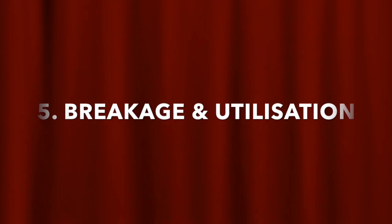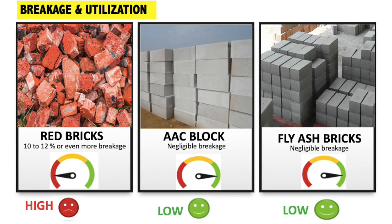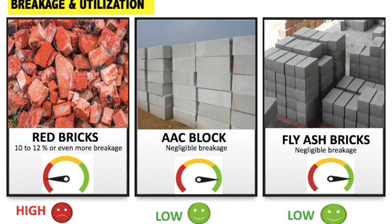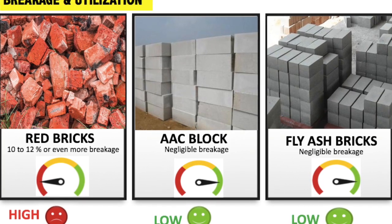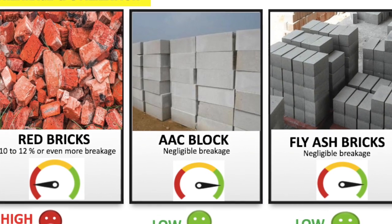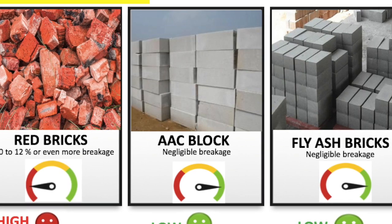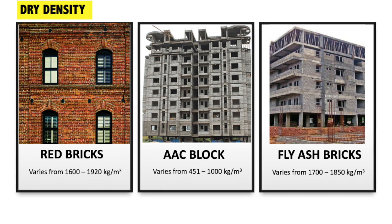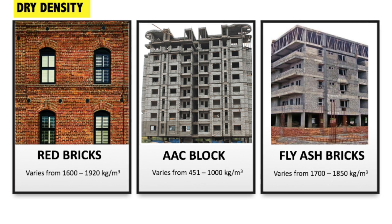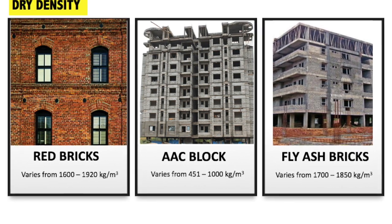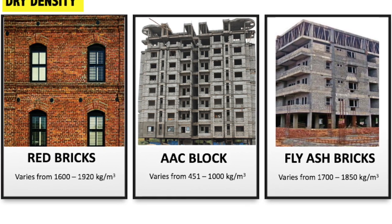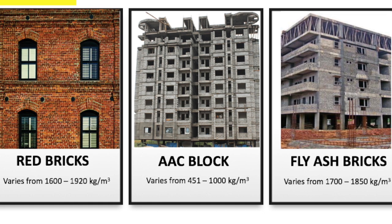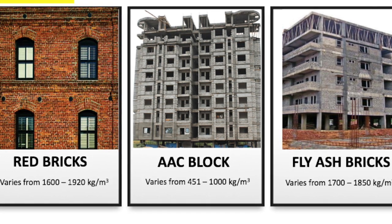Point 7: Breakage and Utilization. In red bricks, an average 10-12% or even more breakages happen on the construction site depending upon the quality of bricks, so 100% utilization is not possible. But in AAC block and fly ash bricks there is negligible breakage and almost 100% utilization is possible. Dry density: red bricks vary from 1600-1920 kg per cubic meter depending on the class. AAC block varies from 451-1000 kg per cubic meter depending on the grade. Fly ash bricks vary from 1700-1850 kg per cubic meter.